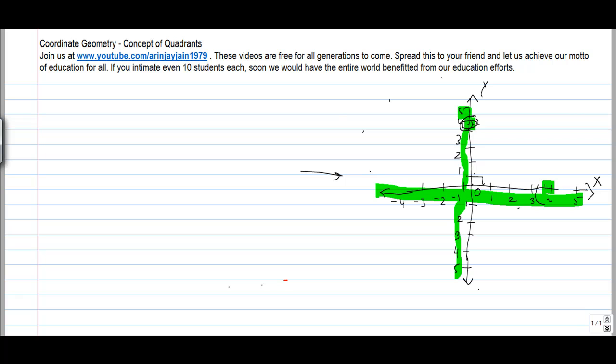These two lines divide the entire plane into four quarters. Quadrant one, and this is always written in the anti-clockwise direction. In four quadrants, these are basically called your quadrant one, quadrant two, quadrant three, and quadrant four.